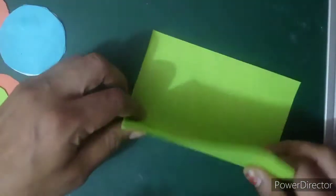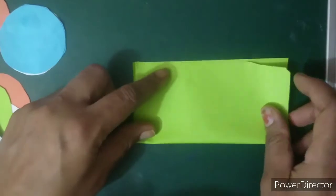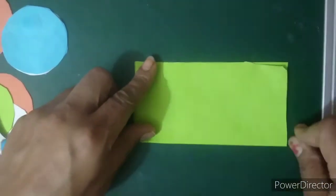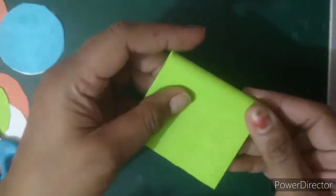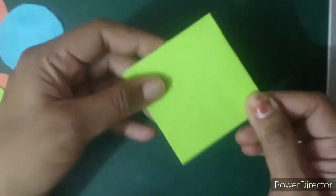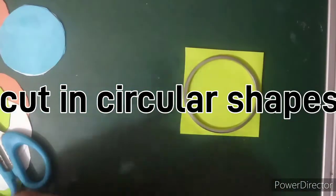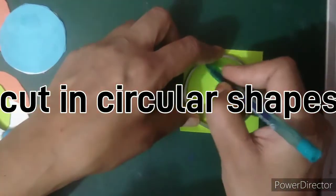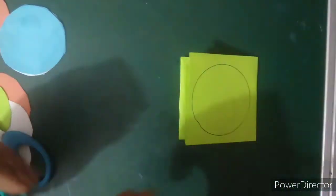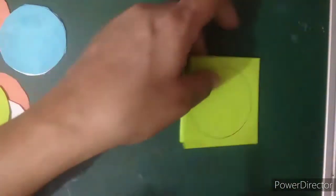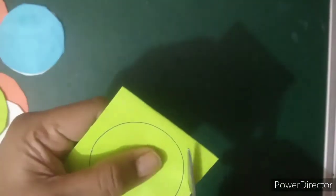Now we are going to fold it like this. Now I am going to put a circular shape here and I will do it like this. Then I will cut this circle.